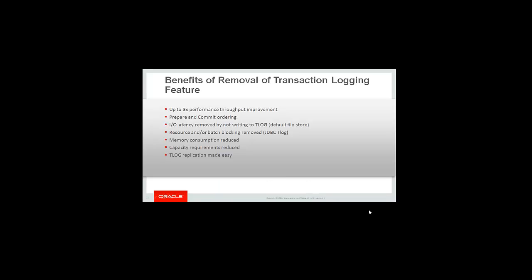What are the benefits? There is up to a three times performance throughput improvement. There is prepare and commit ordering, which addresses a race condition that can occur between JMS and JDBC resources when they commit. IO latency is removed by not having to write to the T-log, and resource or batch blocking is removed when the T-log is a JDBC T-log. Memory consumption and capacity requirements are reduced because there is no writing to the T-log for transaction checkpoint records. T-log replication is also made much easier.